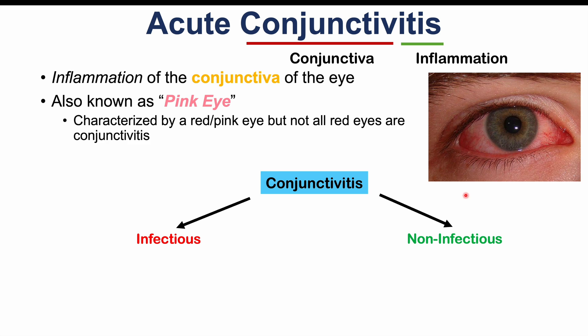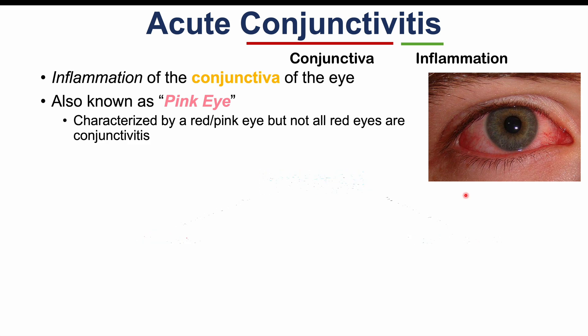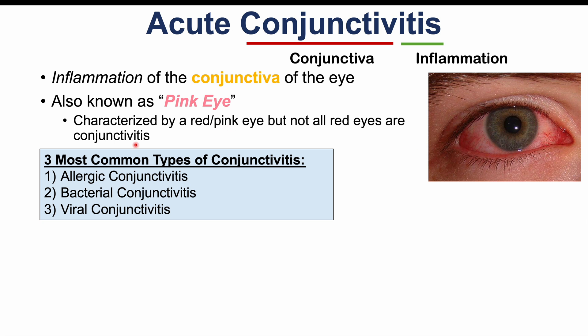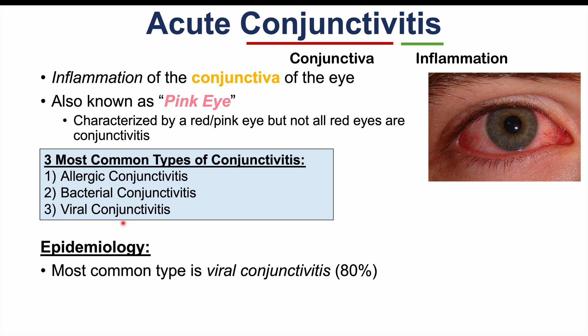The three most common causes of acute conjunctivitis are allergic, bacterial, and viral conjunctivitis, and we'll focus on these three types in this lesson. The most common type overall is viral conjunctivitis, which accounts for approximately 80% of all cases of acute conjunctivitis.